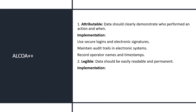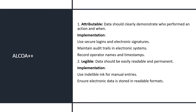For implementing Legible: use indelible ink for manual entries, as indelible ink is permanent and will not spread over the page. Ensure electronic data is stored in readable formats, and follow restoration processes to check data integrity. Avoid overwriting or using correction fluid. If anything is incorrectly written, it should be crossed out with a single line, signed, dated, with justification, and then the correct entry written.